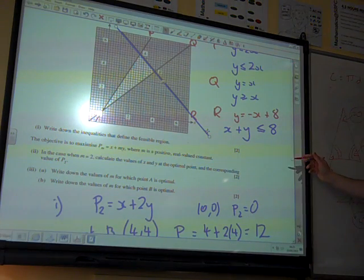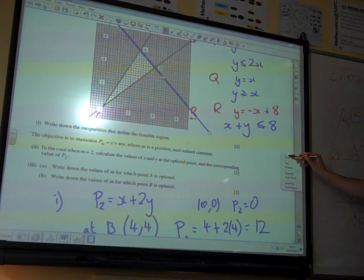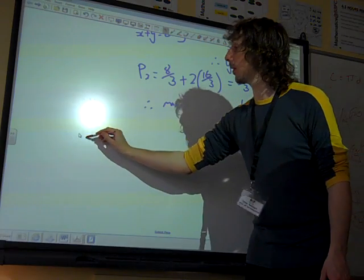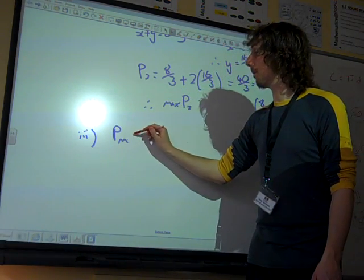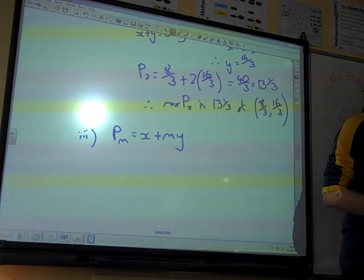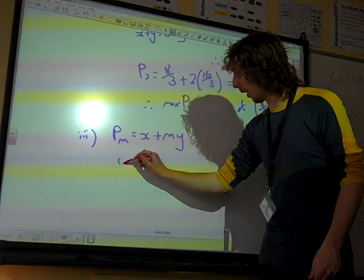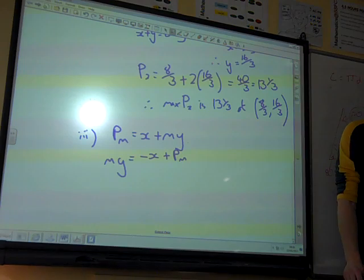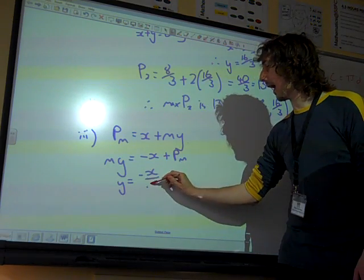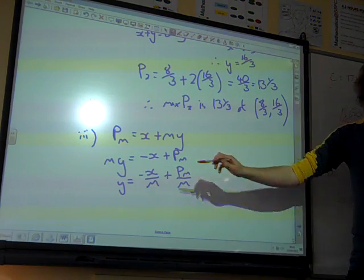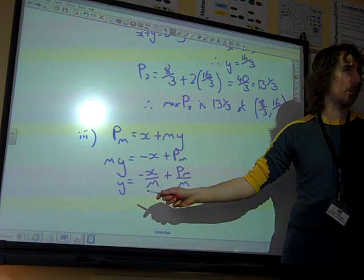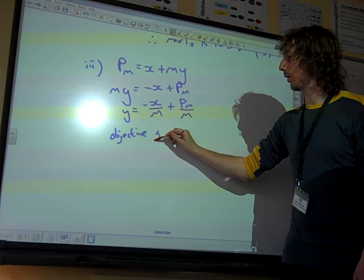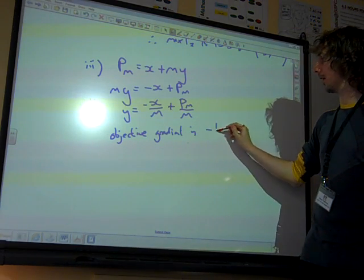So this is what we need to work out. That happens when, well, what's the gradient of that function? Pn is x plus my. As we rearrange this, then my is minus x plus Pn. So y equals minus x over m plus Pn over m. I'm not really that bothered about what's going on over there. What I care about here is the gradient of this line. So the gradient of the objective function is minus 1 over m.